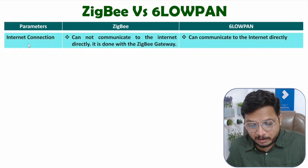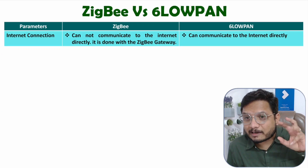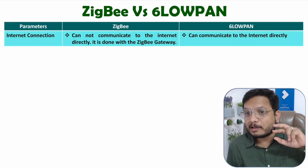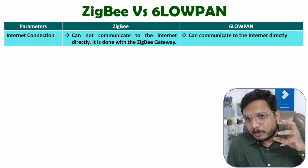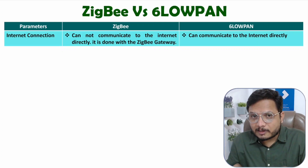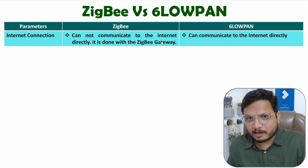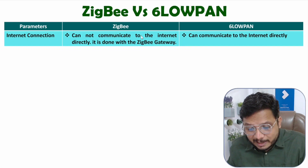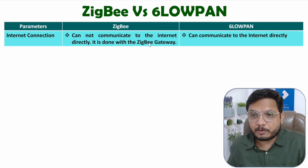The first parameter is internet connection. In a ZigBee network, there is a central coordinator — the ZigBee coordinator — that coordinates the entire ZigBee network. Communication with other networks is done via the ZigBee coordinator only. So internet connection in ZigBee happens via the ZigBee gateway, or ZigBee coordinator. This network cannot communicate directly to the internet; you need a ZigBee gateway.